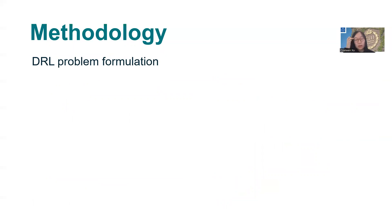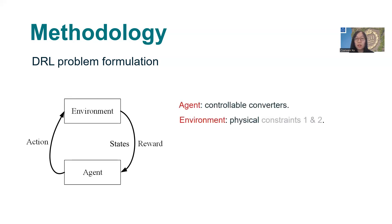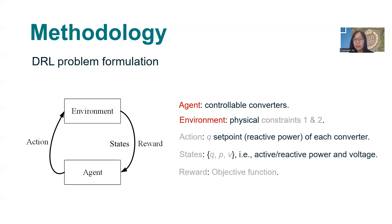Based on the optimization problem, we can formulate the deep reinforcement learning problem, the Markov decision model, that we have an environment and an agent. The agent interacts with the environment and observes the state from the environment. Then, based on the reward, the agent will give action to the environment. Here, the agent is the controllable converters. The environment is the power grid model with the physical constraints. The action is the reactive power setpoint of all converters. The states are the active reactive power and voltage measurement. The reward is the objective function.